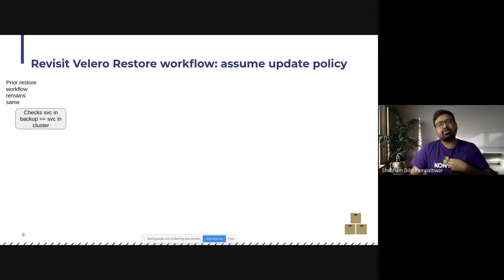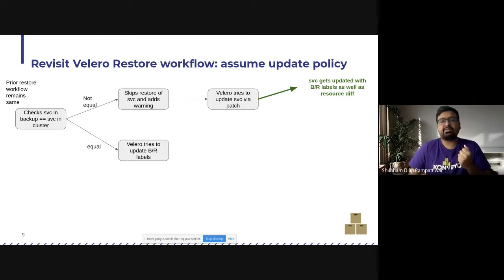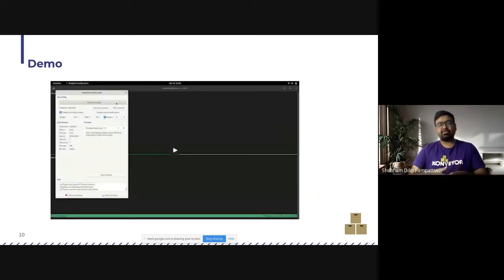So let's revisit the Velero restore workflow. And let's assume that the user has set update policy. So prior workflow remains same till here. So considering the same example of service, Velero checks whether the service in backup is equal to the service in cluster. If it's equal, Velero tries to update just the backup restore labels. If it's not equal, it skips the restore of service and adds a warning. But it tries to patch the service via patch. So service gets updated with backup restore labels as well as resource def. If it fails, then Velero tries to just update the labels.